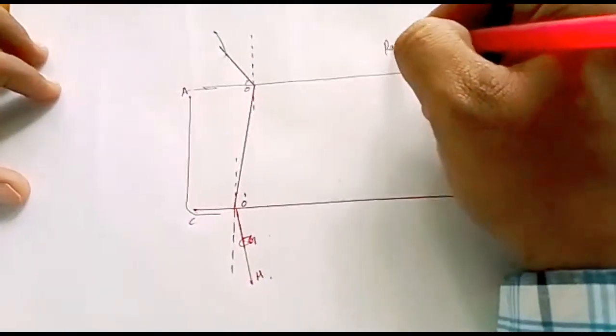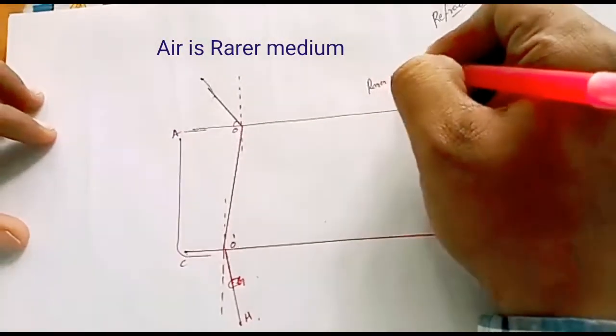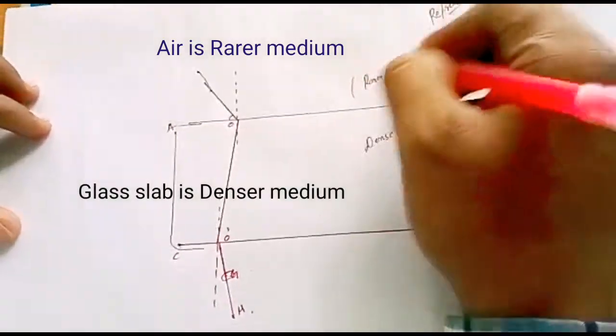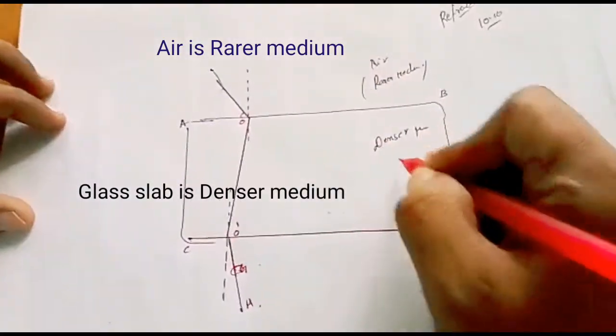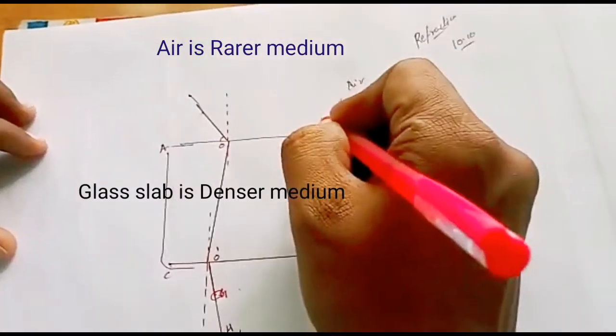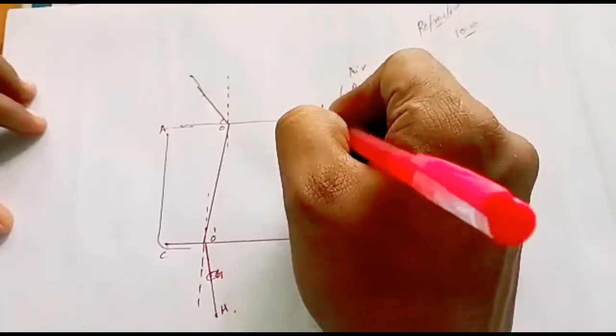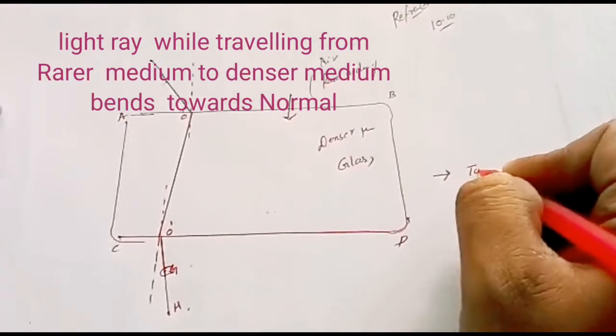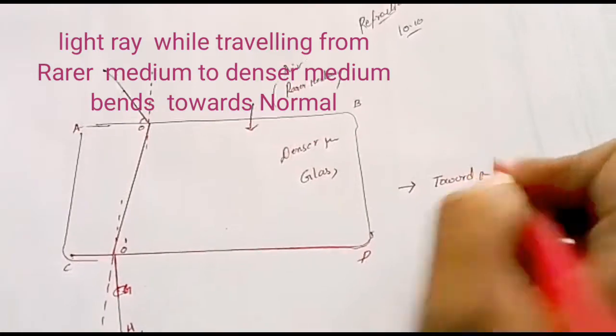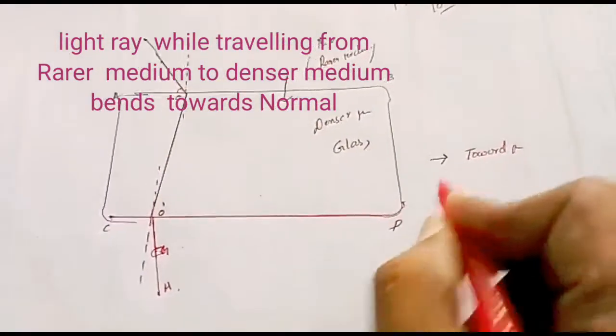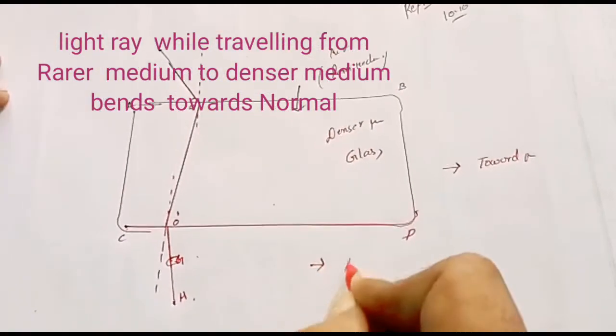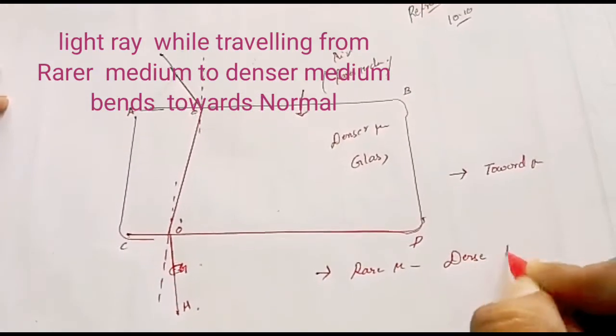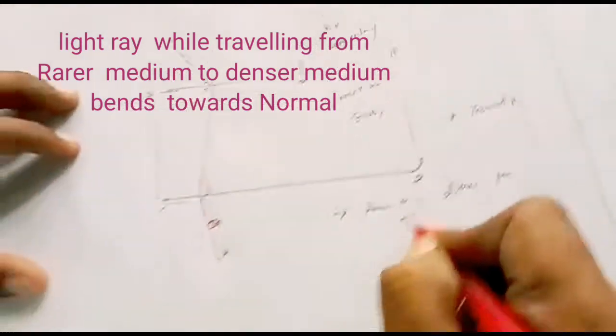So this is rarer medium and this is denser medium. Remember, this is air and this is glass. So when light is travelling from rarer medium to denser medium, it is refracting towards normal. You can see light is bending towards normal. So if light travels from rarer medium to denser medium, it bends towards normal.